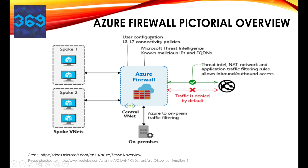Apart from threat intelligence, you can configure L3 to L7 layer policies on the firewall for additional security. The firewall creates NAT and network application traffic filtering rules which allow inbound and outbound access to your applications. Your applications are not directly exposed to the internet or any external traffic — all traffic comes through the Azure Firewall. Your jump host servers and any servers required to connect to the VNet can be placed in the central VNet for more robust control.